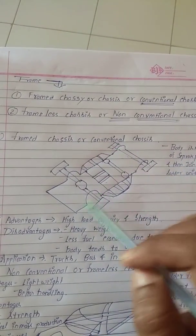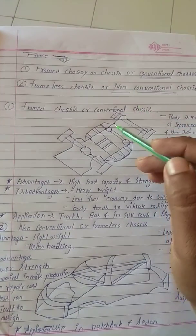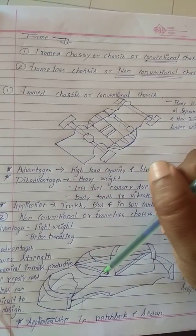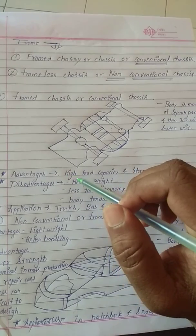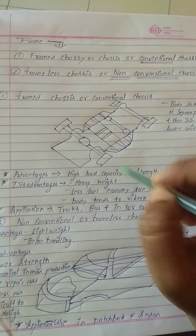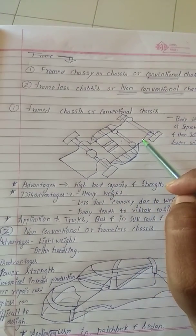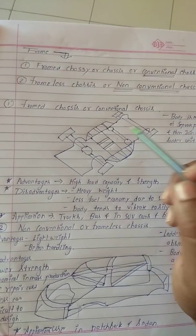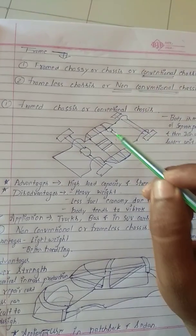I have drawn this so you will be easily able to understand how the frame chassis looks and how the frameless chassis looks. Now I will be discussing the advantages. The advantages are it has high load capacity and strength. This frame chassis is highly strong and has a very large weight-carrying capacity.